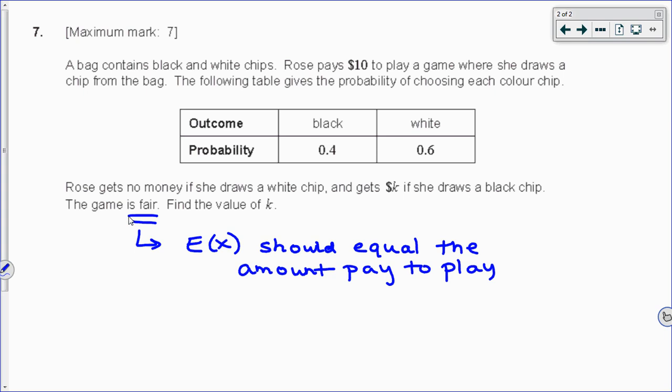But if the person playing is paying money to play, then the expected value of the game, the expected output of money, should also be $10. That would make it fair. If she had a reasonable chance of getting her money back, then it would be a fair game.